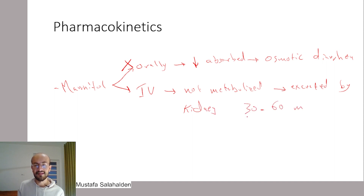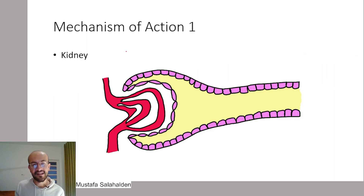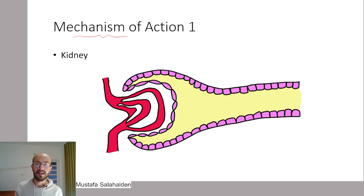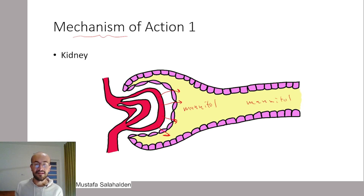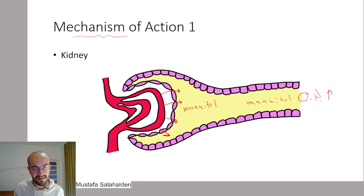Now let's explain the mechanism of action of mannitol. After it is absorbed, it goes into different parts of the human body including the glomerulus, where it is filtrated into the Bowman's capsule. The mannitol is filtrated through into the Bowman's capsule and into the proximal convoluted tubule, and it goes with the filtrate. It leads to an increase in the osmotic pressure inside the filtrate because it is an osmotically active material.